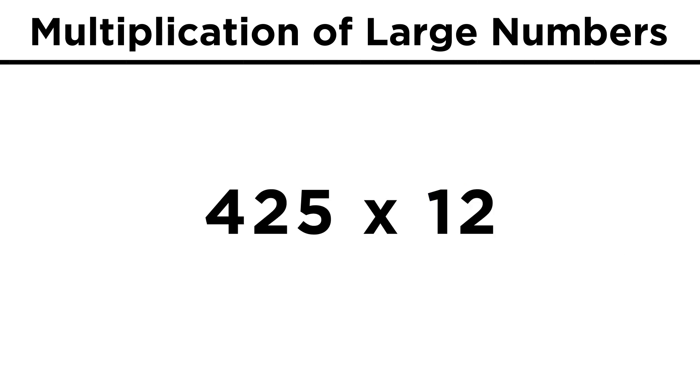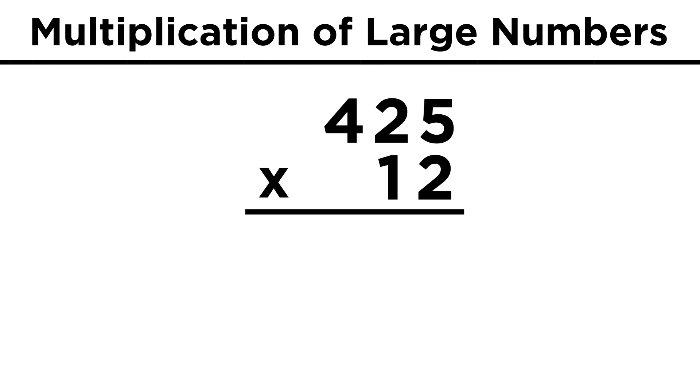Let's try another one, four hundred twenty-five times twelve. Once again, we certainly can follow the rigid algorithm. We put the larger number on top. Five times two is ten, so we put a zero, and carry the one. Two times two is four, plus the one, gives us five, and four times two is eight.